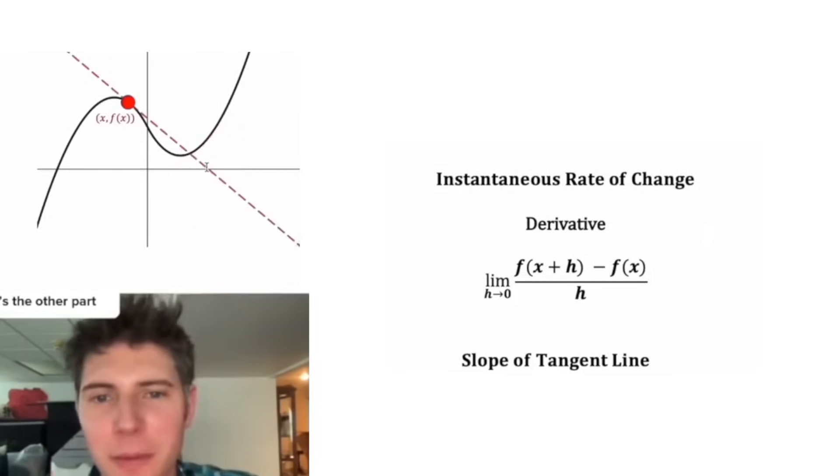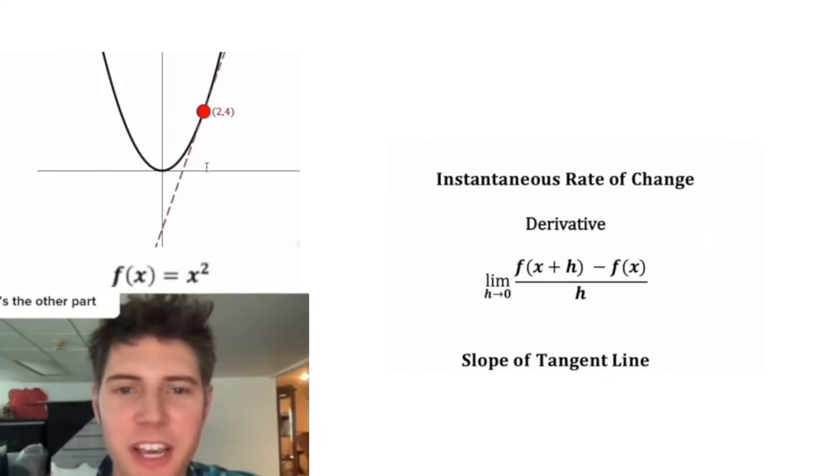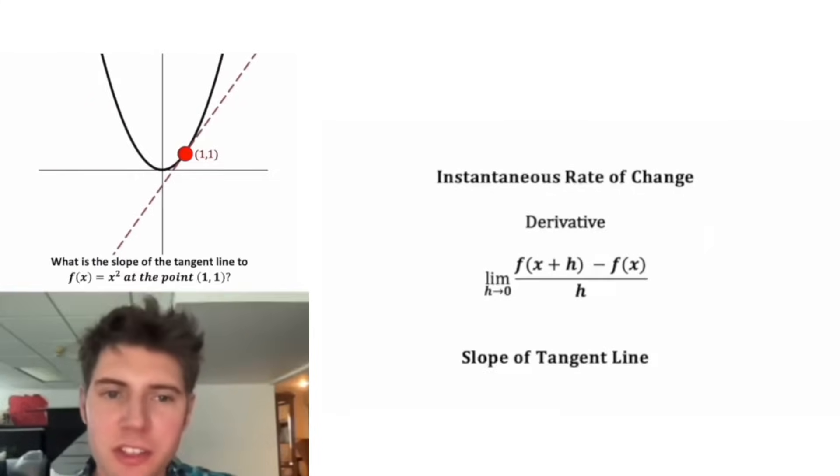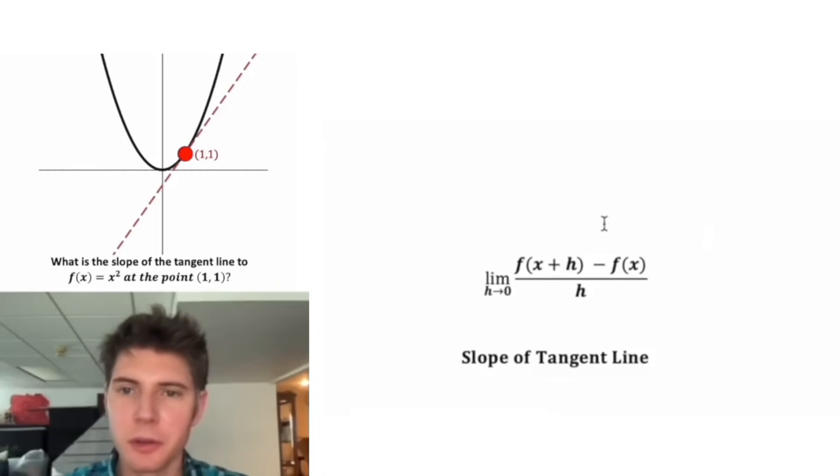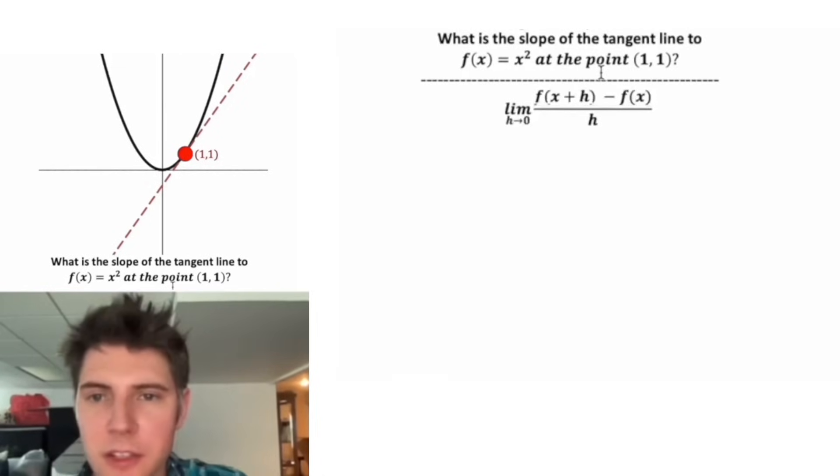Let's do a specific example. Let's look at the parabola y equals x squared. And we can see that there's different tangent lines for it as well. What is the slope of this tangent line to the parabola f of x equals x squared at the point one one? Let's get rid of this real quick. This is the slope of the tangent line. So that's how we're going to answer the question. Let's bring this down.